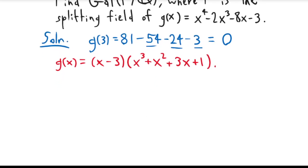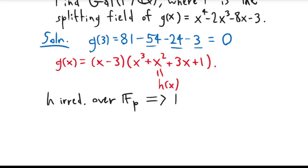I'm going to claim that this polynomial, which we can call h(x), is actually irreducible over Q. To show that, I'll use a trick: if h is irreducible over a finite field then it's irreducible over Q — and also over Z, because those are equivalent. This works because it's essentially a contrapositive argument: if a polynomial were reducible over the rationals, it would still be reducible over a finite field after reducing the coefficients.